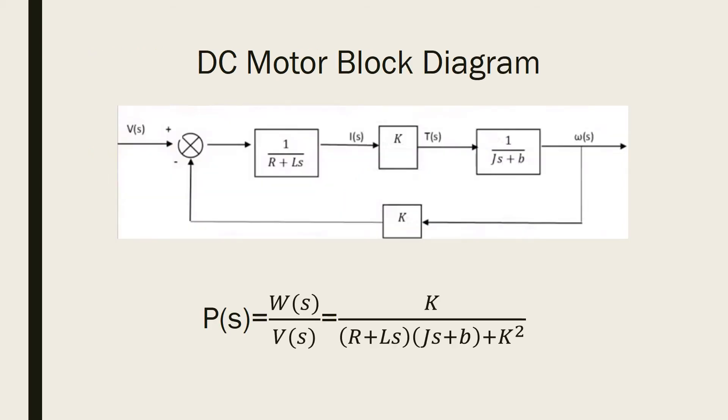The DC motor system block diagram can be simplified to omega over V equals K over the quantity of R plus Ls times the quantity of Js plus B plus K squared.